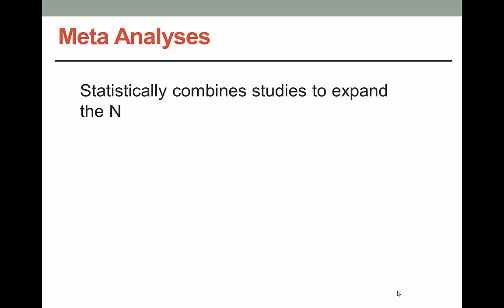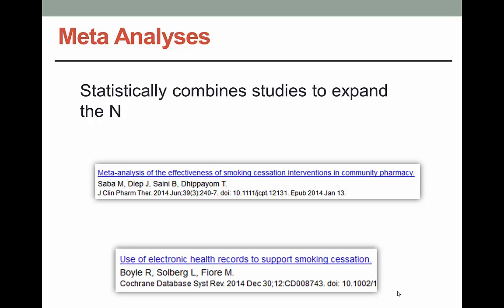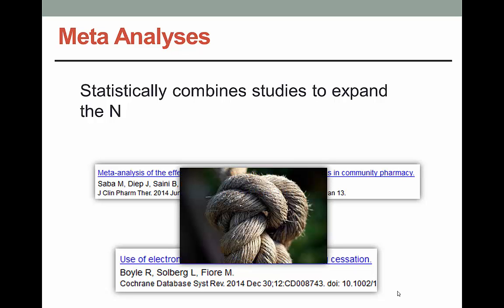A meta-analysis is a subset of a systematic review — kind of like a super systematic review. It takes the process one step further by applying statistical analysis to evaluate all the different studies as if they were one. So with a systematic review you could look at 10 separate studies on smoking cessation to draw a conclusion, but with a meta-analysis you treat the studies as one after a lot of complicated statistics, and your total n could be in the tens or even hundreds of thousands. Meta-analysis has been compared to creating a rope: one strand isn't very strong, but combining many strands gives you something you can rely on. A meta-analysis is considered the best of the best for evidence-based information.